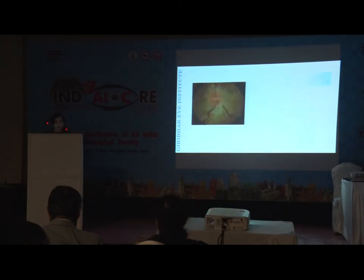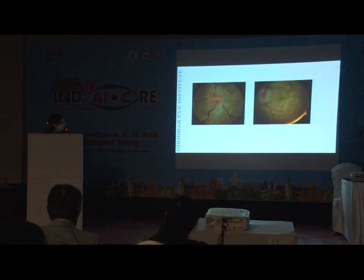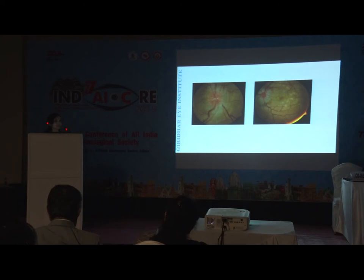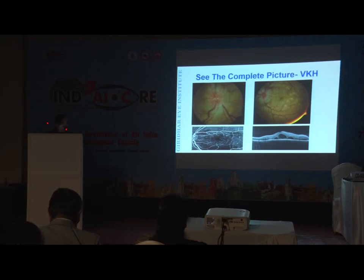Not all disc edemas with blurred vision are optic neuritis. If you only do a 90D examination you will see a swollen disc with peripapillary edema, but you have to see the bigger picture. With proper indirect ophthalmoscopy you may detect tiny yellowish subretinal detachments, which can be confirmed on OCT. FFA will show hyperfluorescent pinpoint leakages — you're actually dealing with VKH (Vogt-Koyanagi-Harada) disease.